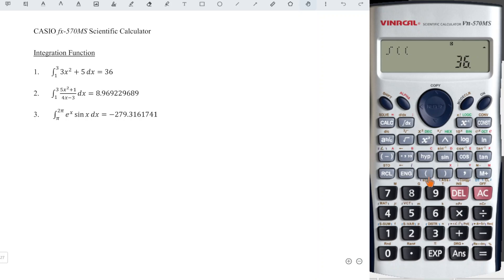So we have bracket, 5 alphabet x square plus 1, close bracket. Then over. We can use fraction or divide bracket for the denominator. So, 4 alphabet x minus 3, close bracket, comma, lower limit 1, comma, upper limit 3. And we press equal, then we will obtain the correct value as we can see here.